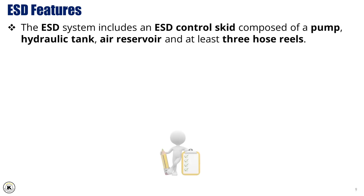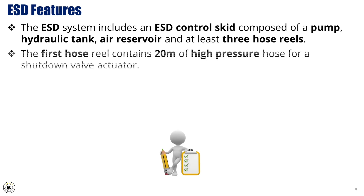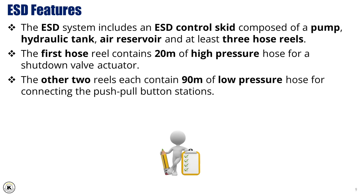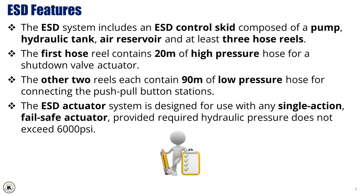The ESD system includes an ESD control skid composed of a pump, a hydraulic tank, an air reservoir, and at least three hose reels. The first hose reel contains 20 meters of high-pressure hose for a shutdown valve actuator. The other two reels each contain 90 meters of low-pressure hose for connecting the push-pull button stations. The ESD actuator system is designed for use with any single-action, fail-safe actuator, provided required hydraulic pressure does not exceed 6000 PSI.